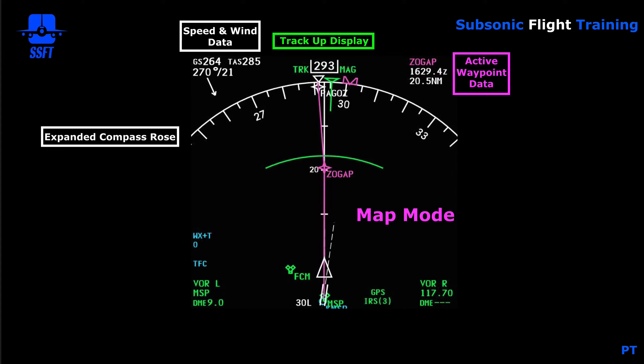It's a moving map representation of your route of flight, oriented in the direction that you're flying. Moving from the top, we have an expanded compass arc that goes 80 degrees from side to side when you're in this mode. Just to the right of that we have speed and wind data.